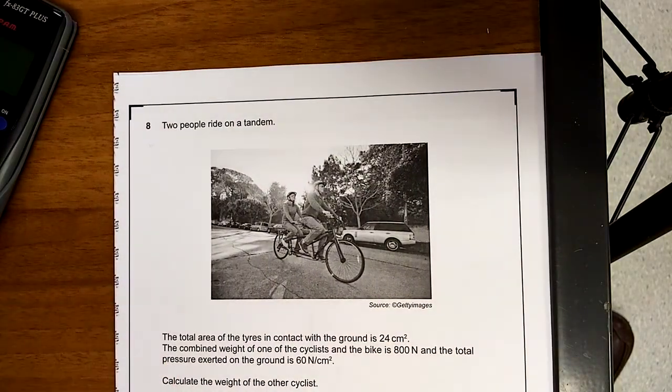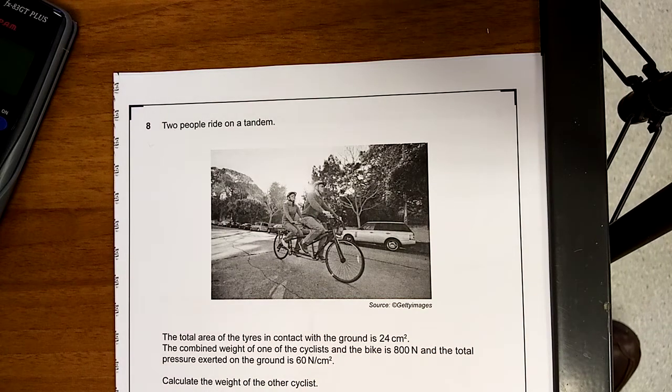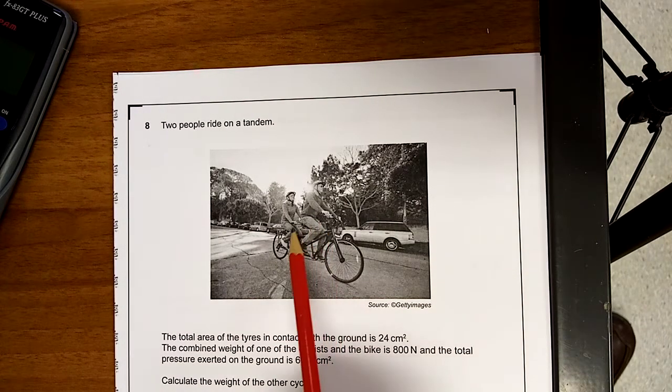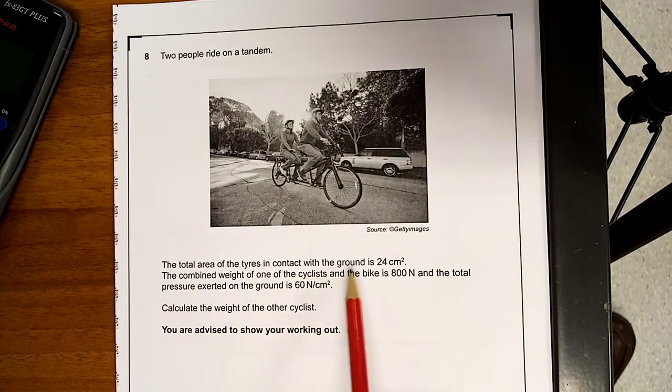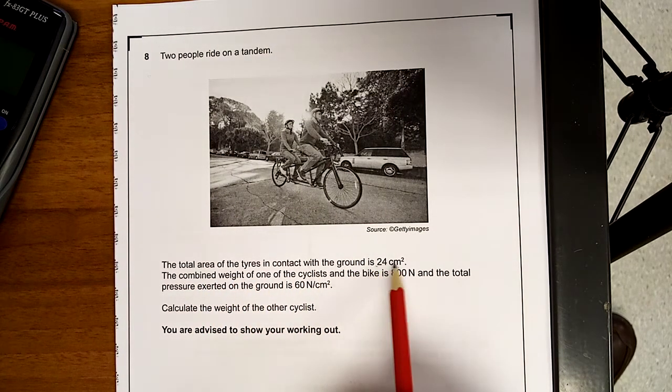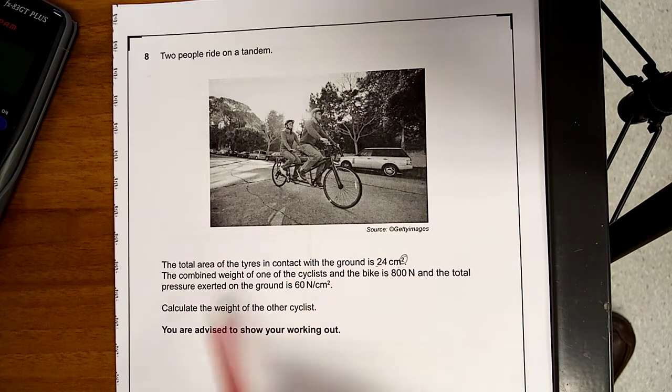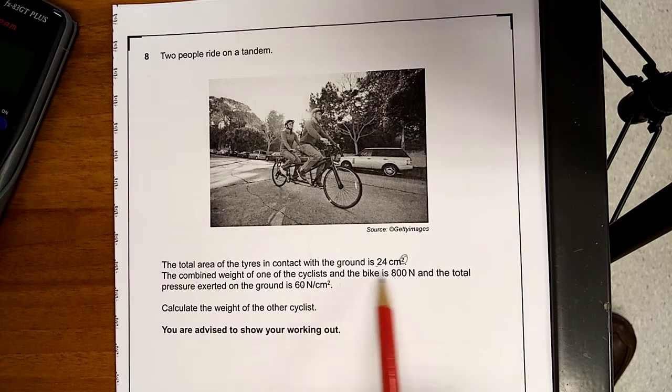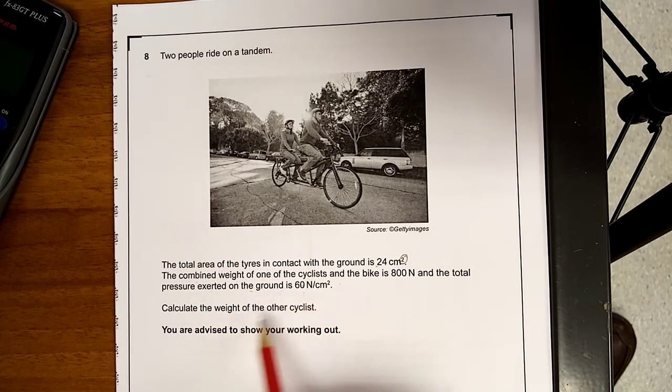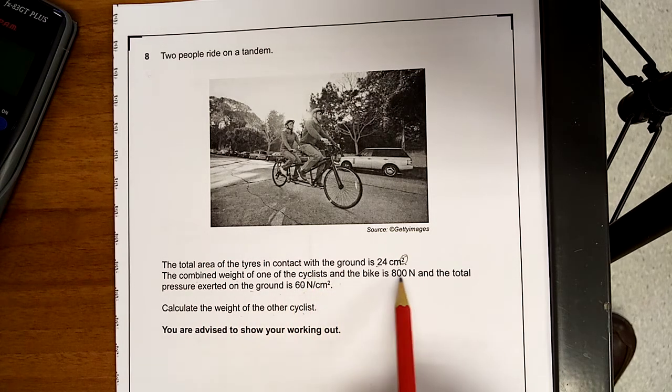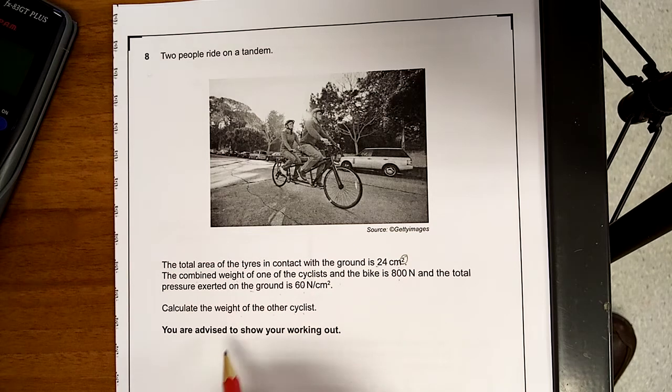Here we are in the next question, number eight. Two people ride on a tandem. There's the two people and there's a tandem. The total area of the tyre in contact with the ground is 24 centimetres squared. So that's the ground, that's an area, two dimensions. The combined weight of one of the cyclists and the bike is 800 newtons.